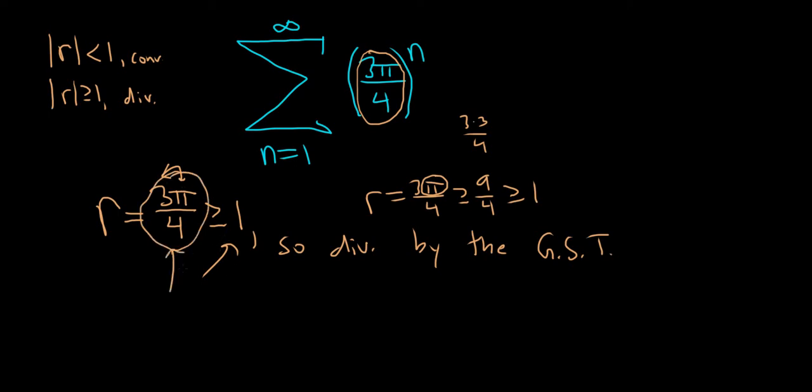I mean if you really wanted to you could put it in your calculator. Let me just do that to show you. So it's three times pi over four. So yeah this number is roughly 2.356 and that's bigger than one so diverges by the GST. Really simple problem and that's it.